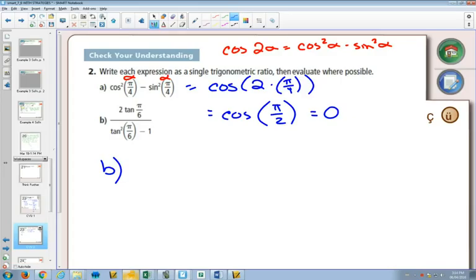But if we recognize this is a double angle identity for tan, equal to tan(2 · π/6)...